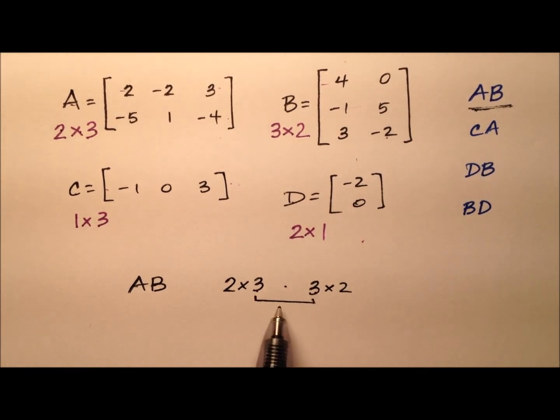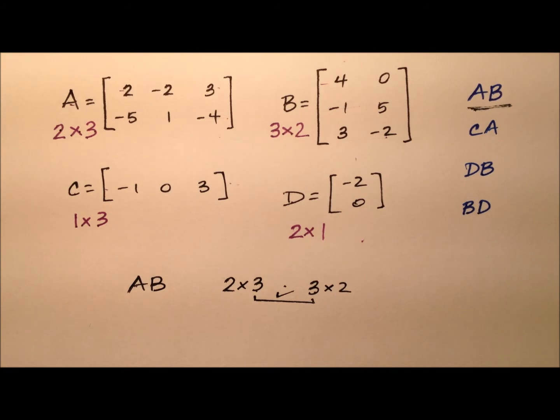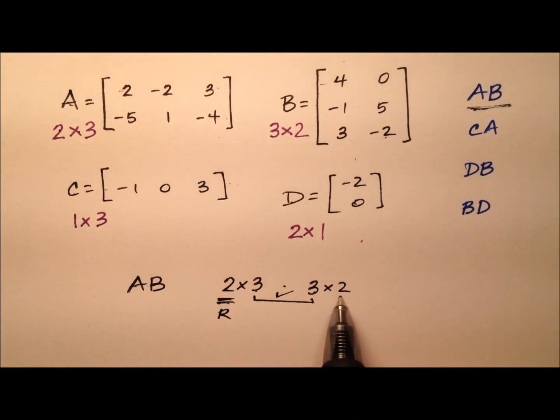so we know we can do this matrix multiplication, and the dimensions of the product matrix will be two rows and two columns. So AB will have the dimensions of a 2 by 2.